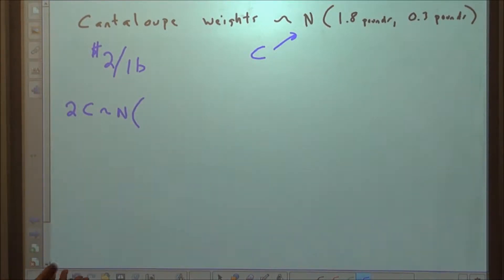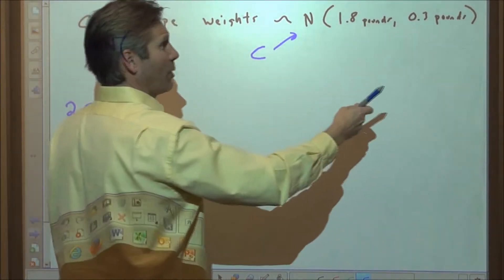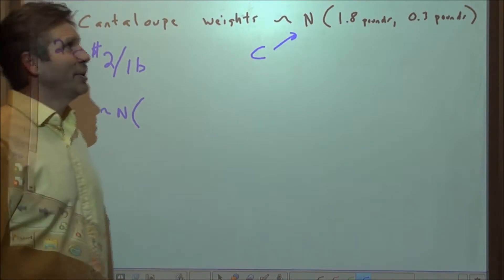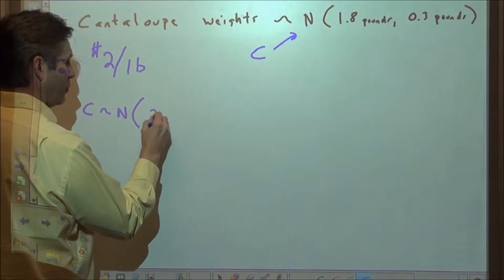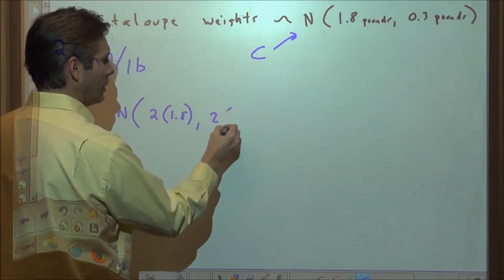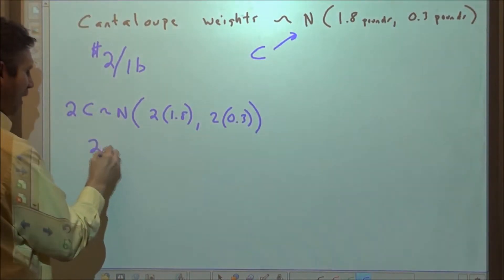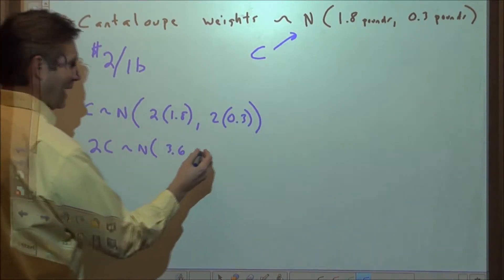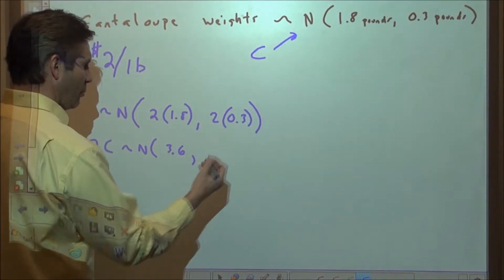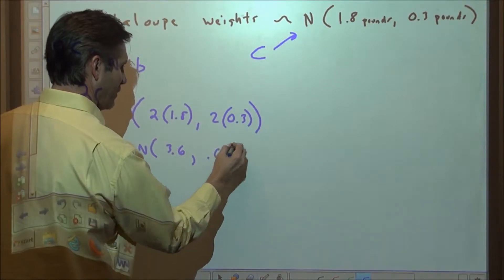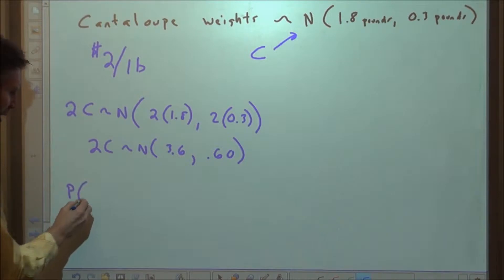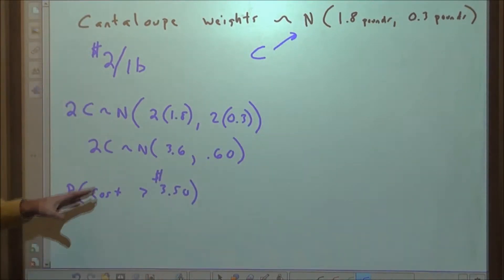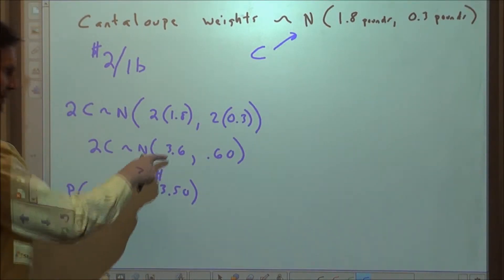If we multiply all the cantaloupe weights by 2 to convert to cost, the mean gets multiplied by 2 and the standard deviation also changes. The new distribution: we take 2 times the old mean and 2 times the old standard deviation. The cost of the cantaloupe at $2 a pound will be normally distributed with a mean of $3.60 and a standard deviation of 2 times 0.3, which is $0.60. So that's our new distribution.